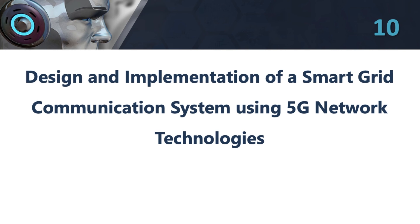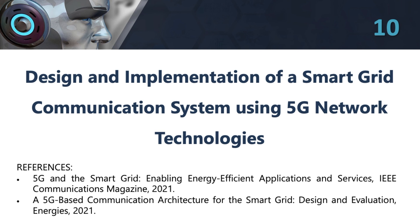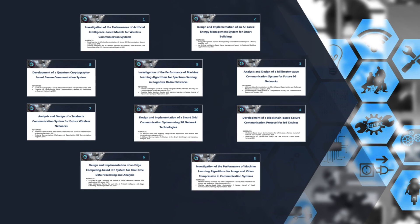10. Design and implementation of a smart grid communication system using 5G network technologies. This topic involves designing and implementing a smart grid communication system that uses 5G network technologies to improve the efficiency and reliability of power grid operations. The project could involve developing and testing a prototype system that uses 5G networks for communication between power generation, transmission, and distribution components. The project could also involve evaluating the impact of different factors such as latency, bandwidth, and security on the performance of the smart grid communication system.